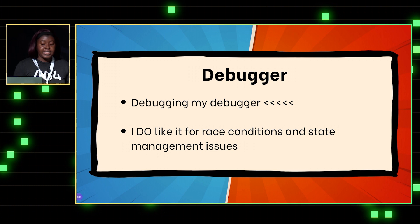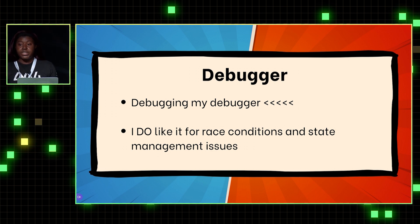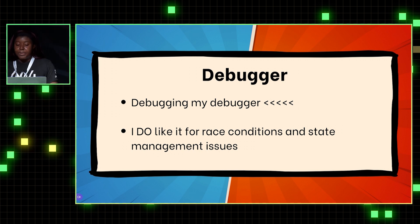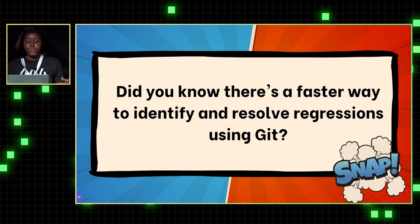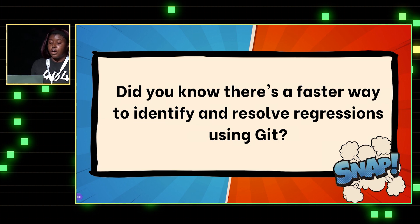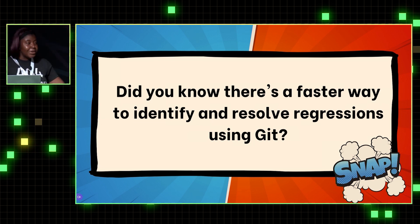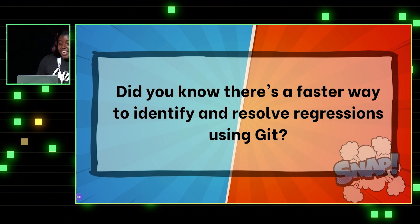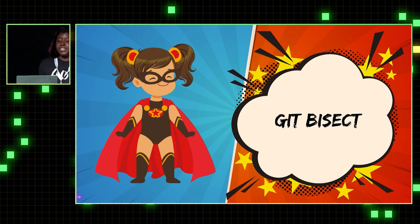However, I do see the value of the debugger when I'm dealing with race condition issues or state management issues, so it has been helpful there. But we're not really here to talk about print statements versus the debugger. I'm actually here to introduce you — or reintroduce you — to a faster way to identify and resolve regressions using Git. It's called Git Bisect, and we're going to go into it a little bit deeper.